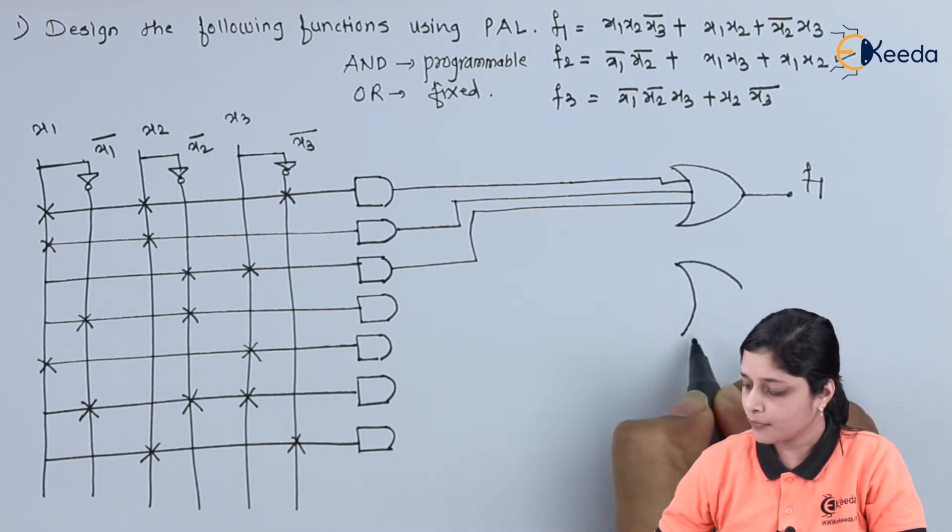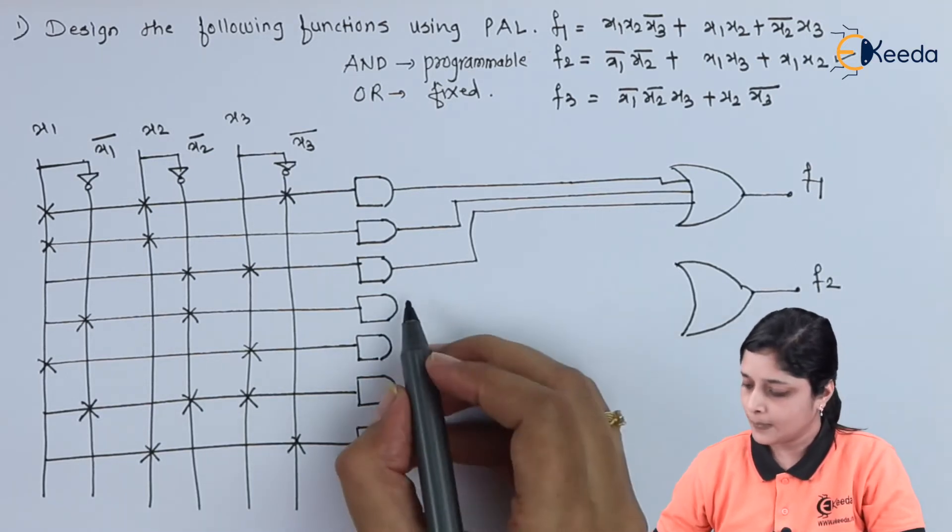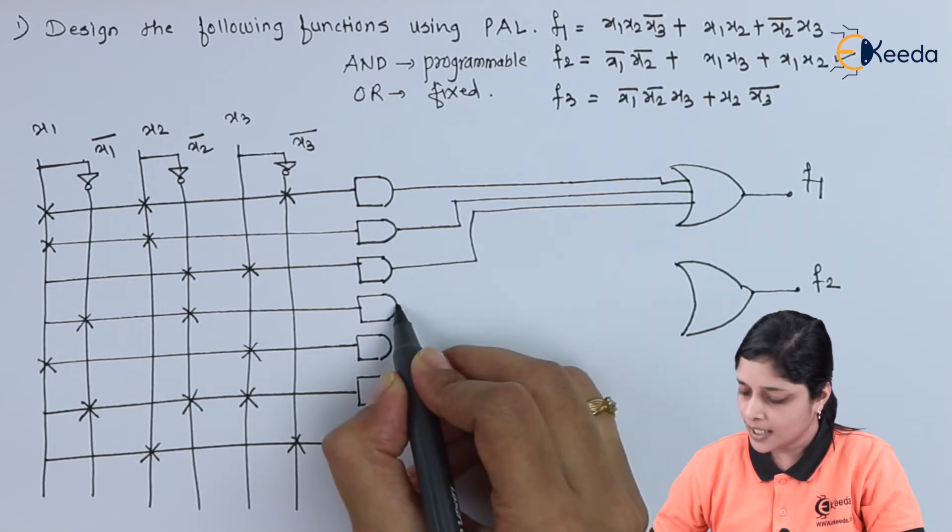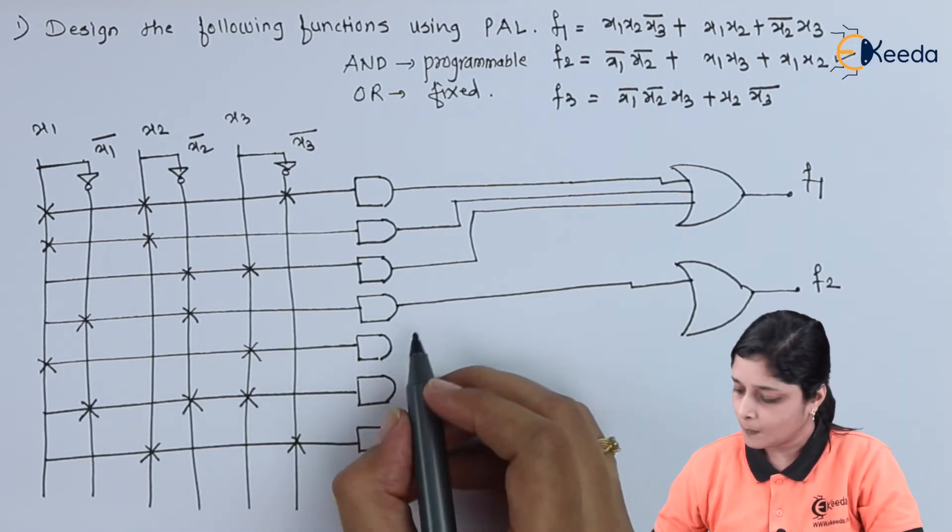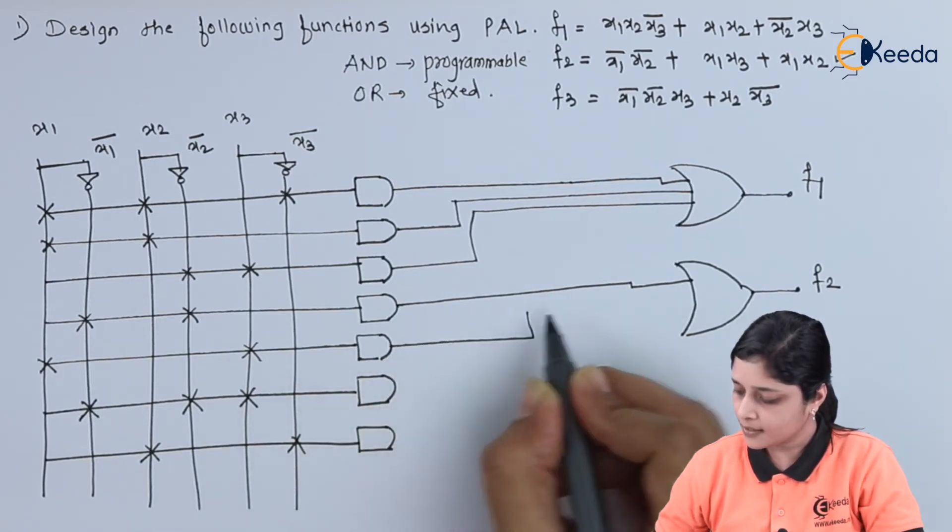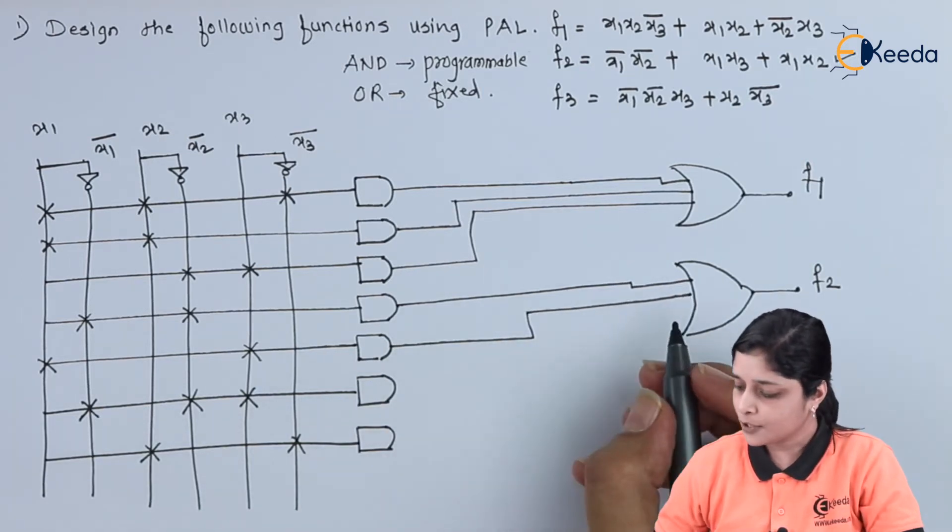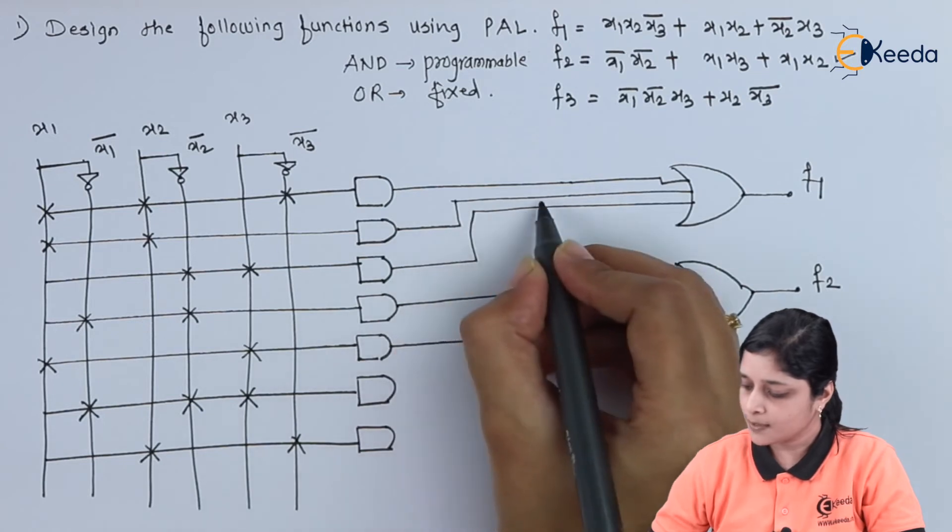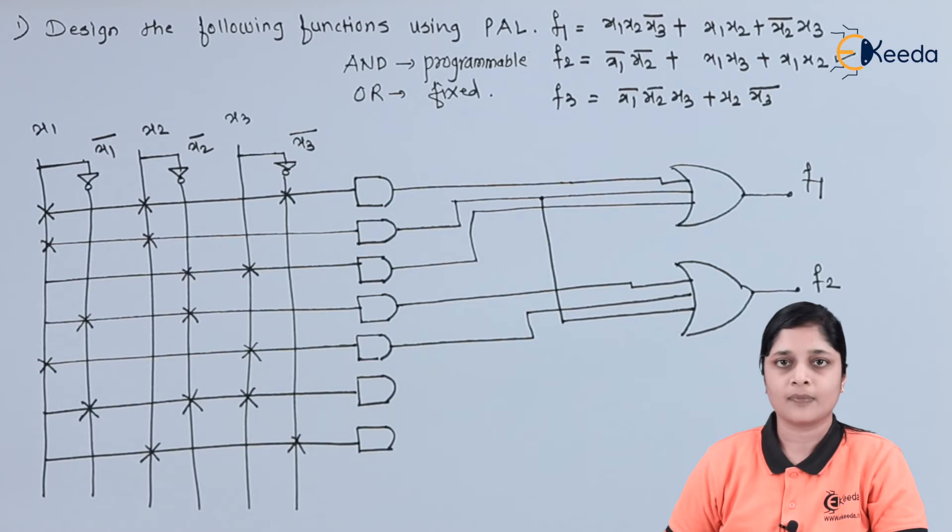Then for F2, again you require OR gate. For that, x1 bar x2 bar is required. Yes, we have drawn here. Then x1 x3 required. Yes, we can draw like this. So this becomes your x1 x2, I will draw like this. This is the implementation for function 2.